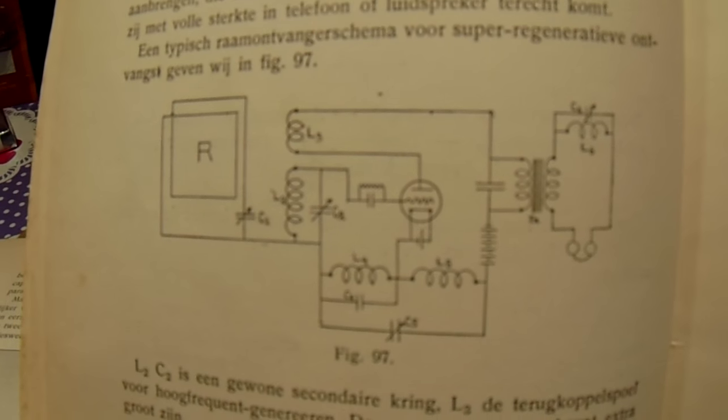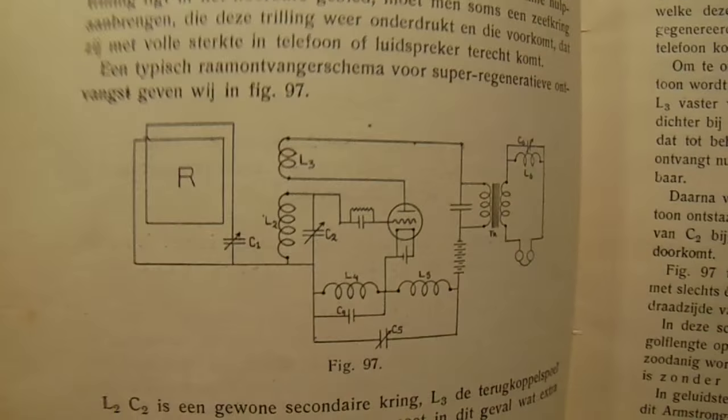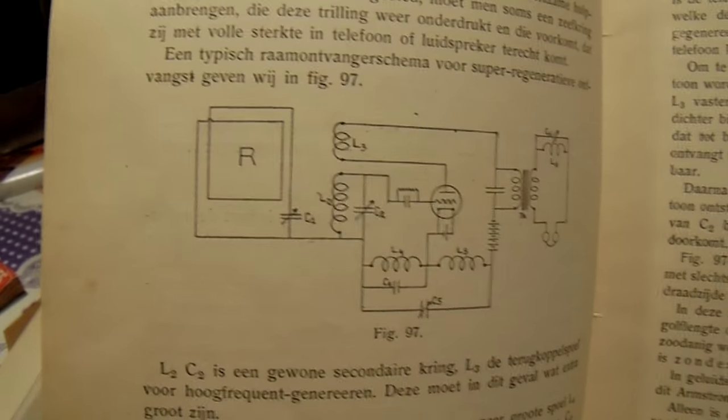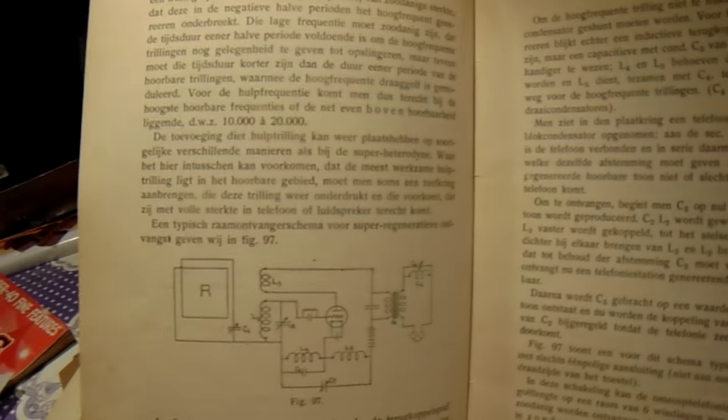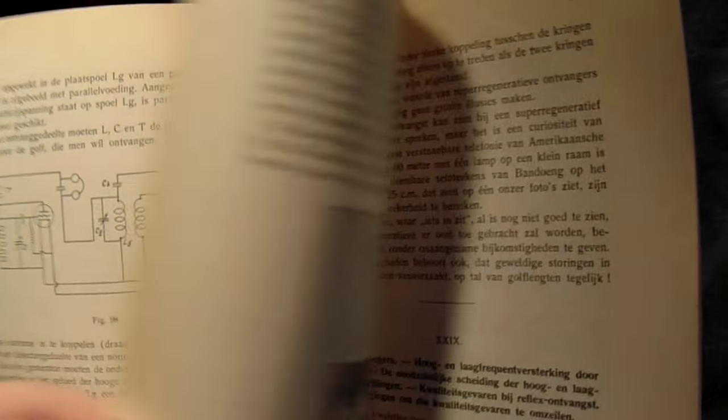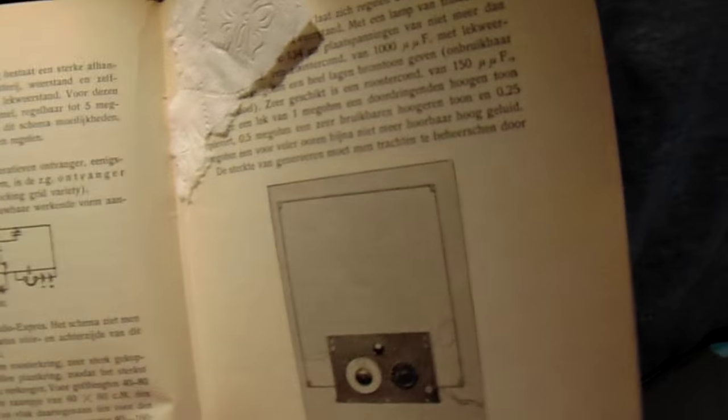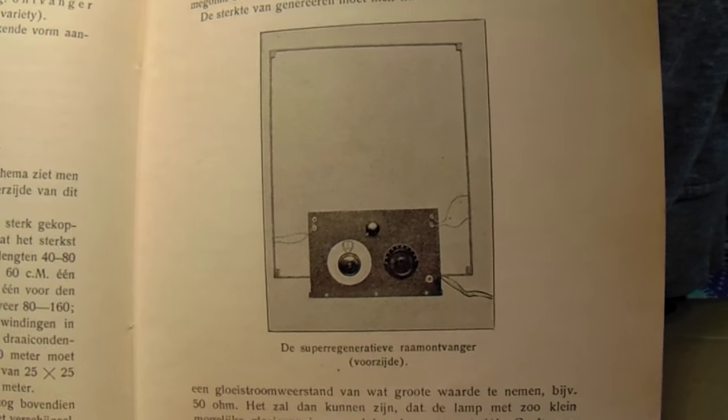That's visible here. I hope I could explain this a little bit. It's quite difficult to explain. But okay, let's look here on the next pages on photographs from super reg receivers from the 1930s. This is one for instance.